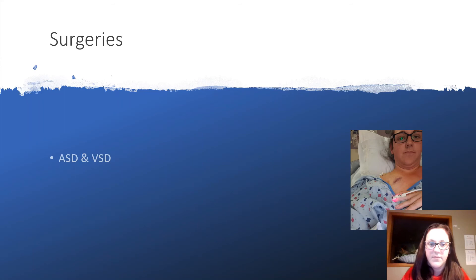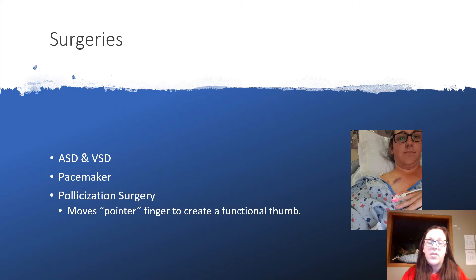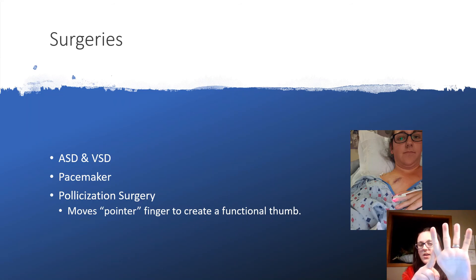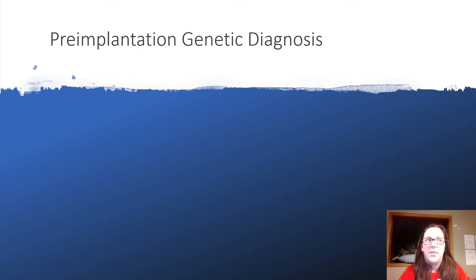Here's a picture of me with my pacemaker. There are surgeries that can repair ASDs and VSDs if the holes do not close or become worse. You can have a pacemaker put in — as in my case — if you have a fast or slow heartbeat. There's also a surgery called pollicization, which we've opted out of for the kids. What that surgery does is move the pointer finger, turn it in and down to create a functional thumb so people can grasp things.